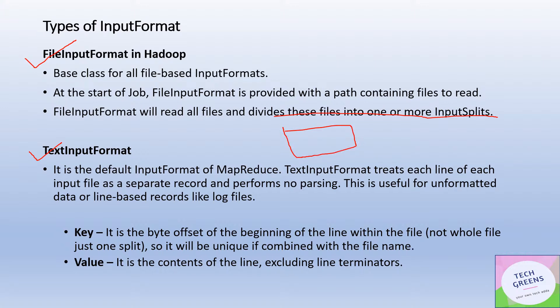With TextInputFormat, if you have a text file with different lines of text, those lines are converted into key-value pairs where the keys are the offsets or positions of the rows and the values are the text of the row. This InputFormat creates key-value pairs from the lines, and it is useful for unformatted or line-based records. This is the default InputFormat in the Hadoop world.